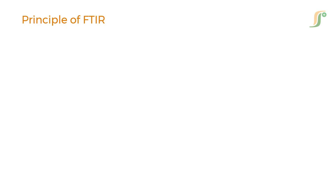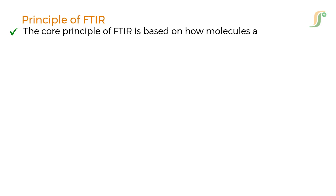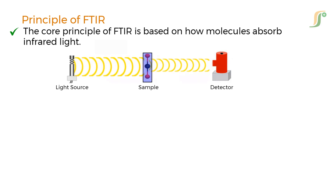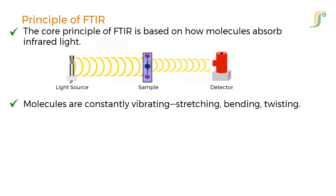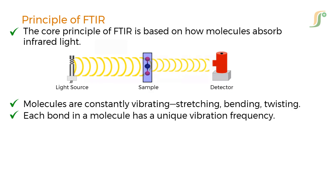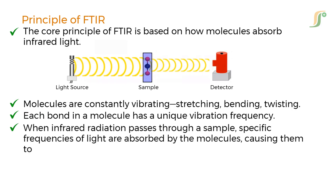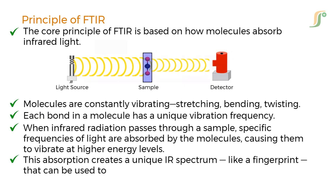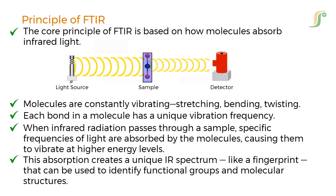Now let's understand the principle in more depth. The core principle of FTIR is based on how molecules absorb infrared light. Molecules are constantly vibrating — stretching, bending, twisting. Each bond in a molecule has a unique vibration frequency. When infrared radiation passes through a sample, specific frequencies of light are absorbed by the molecules, causing them to vibrate at higher energy levels. This absorption creates a unique IR spectrum, like a fingerprint, that can be used to identify functional groups and molecular structures. This brings us to the heart of FTIR — the interferometer.